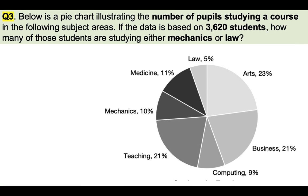Question number three. Below is a pie chart illustrating the number of pupils studying a course in the following subject areas: law, arts, business, computing, teaching, mechanics, and medicine. We have the percentages of students studying on each course. How many of those students are studying either mechanics or law? We can see here mechanics is 10% of that total and law is 5%. So we need to calculate 15% of 3,620 students to get the answer.